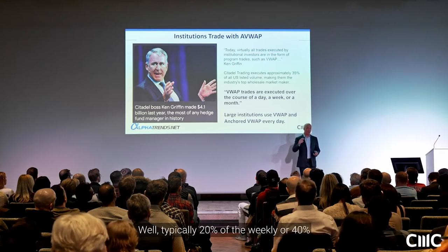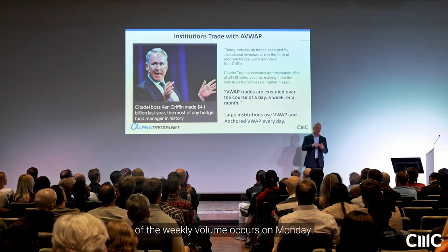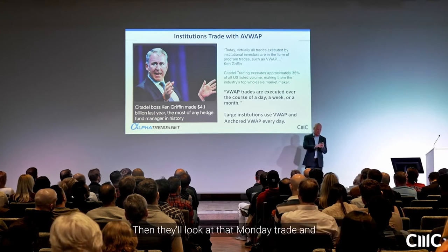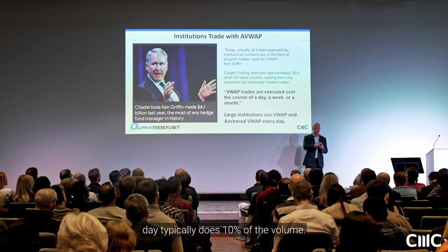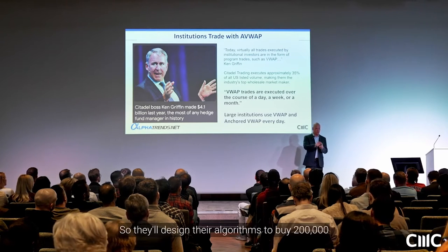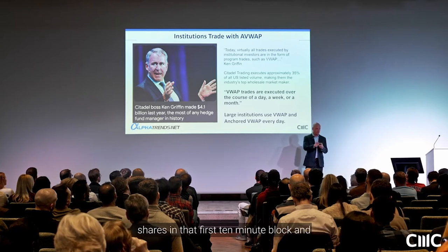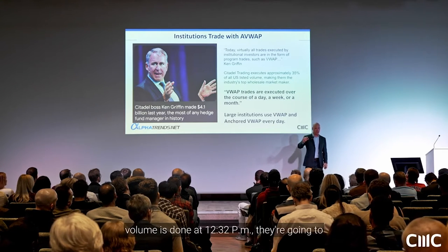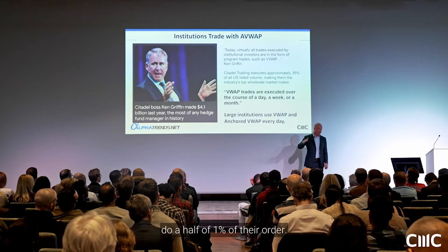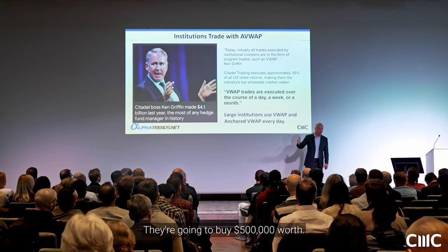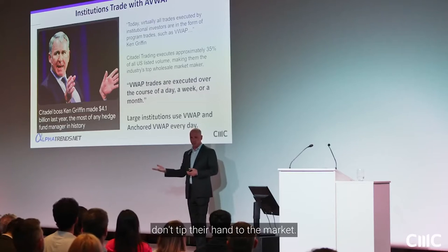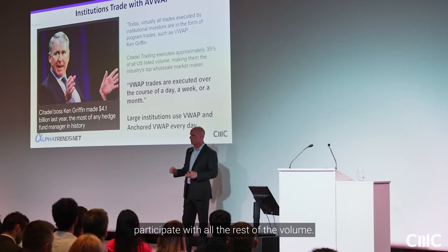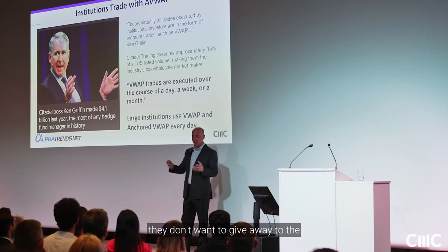Typically 40% of weekly volume occurs on Monday, so they'd buy two million shares Monday. They'll look at Monday's trade and note that the first 10 minutes does 10% of volume — so their algorithm buys 200,000 shares in that first 10-minute block, then spreads it throughout the day proportionally. When 0.5% of volume is done at 12:32 PM, they buy 0.5% of their order — maybe 500,000 dollars worth. They do this so the market doesn't know there's a big buyer.